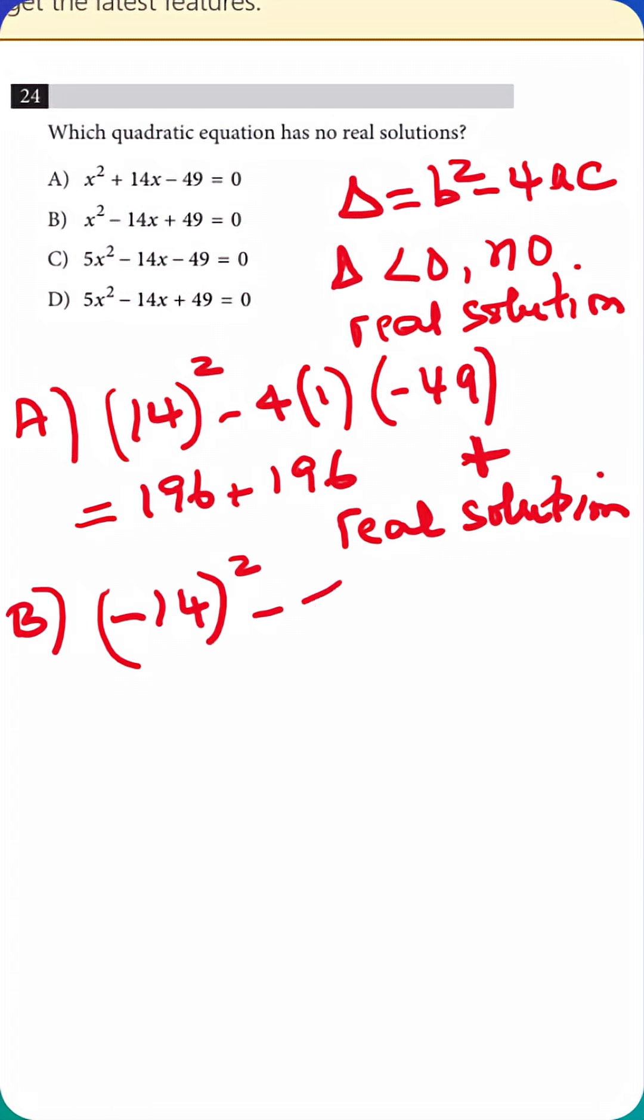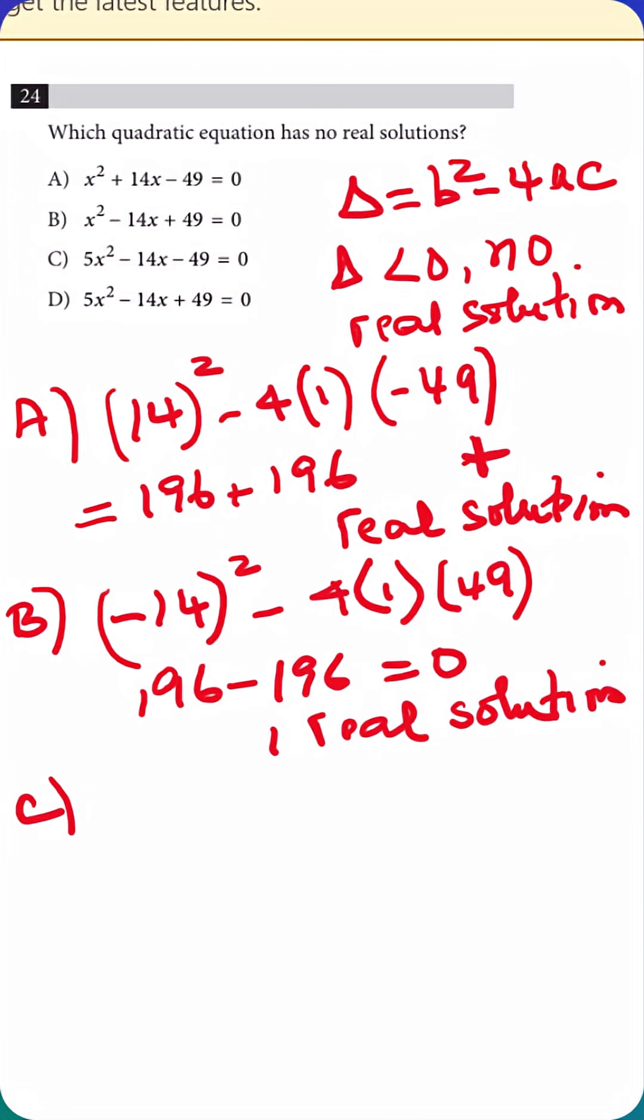Option b, negative 14 squared minus 4 times 1 times 49, that equals 196 minus 196 equals zero, so it has exactly one real solution.